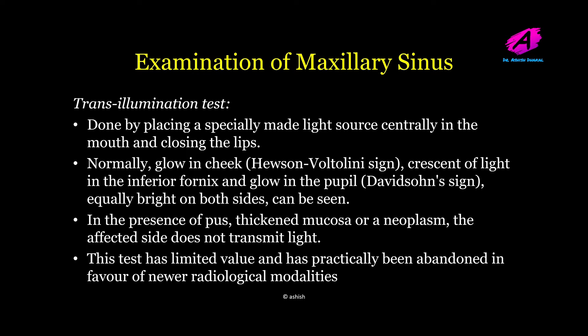The transillumination test is not commonly done nowadays but is historically important. It is performed by placing a specially made light source centrally in the mouth and closing the lips. Normal findings include a glow in the cheek known as the Heurteloup-Voltolini sign, a crescent of light in the inferior fornix, and glow in the pupil known as Davidson's sign, which should be equally bright on both sides. In the presence of pus, thickened mucosa, or neoplasm, the affected side does not transmit light. This test has limited value and has been largely abandoned in favor of modern radiological modalities.